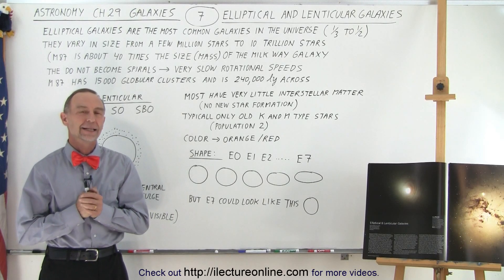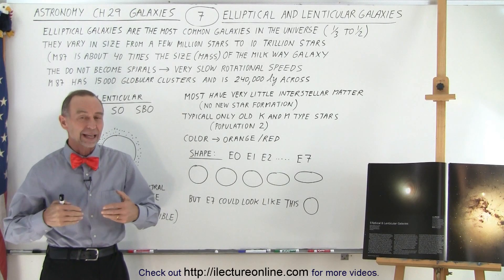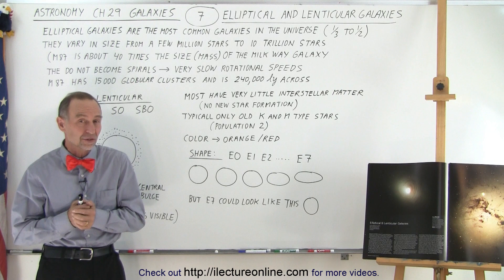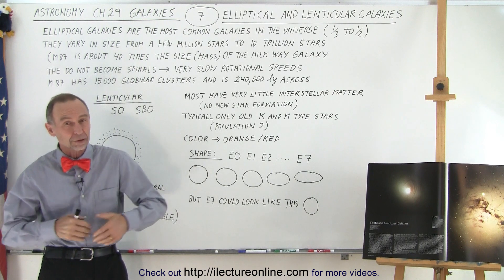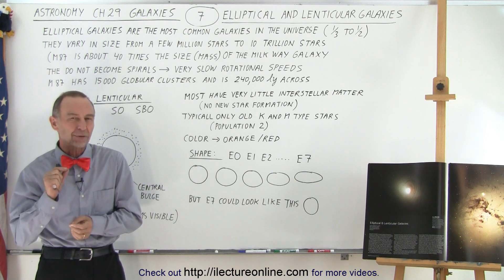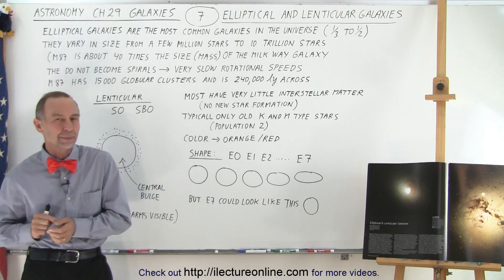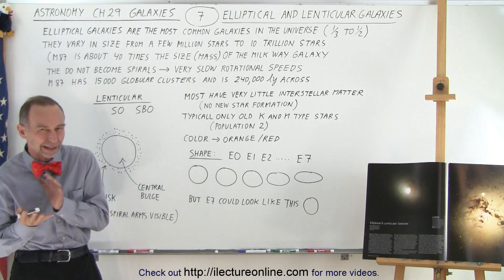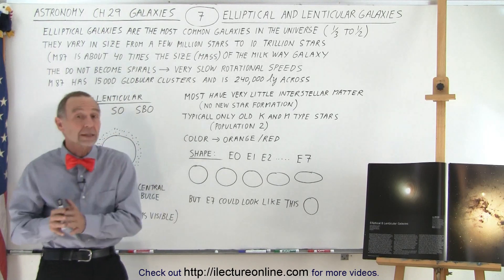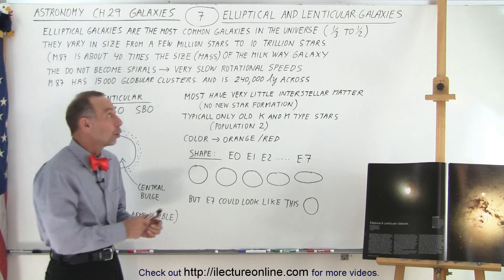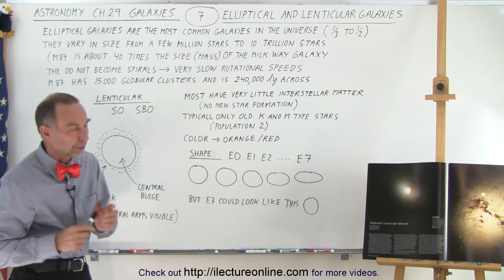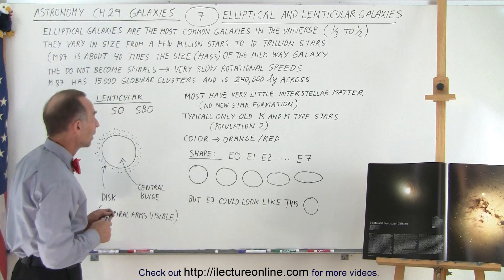Welcome to Electronline. Next, let's take a look at elliptical galaxies, and also among the elliptical galaxies we have a special type that's kind of a cross between elliptical and spiral galaxies. They're called lenticular galaxies, so we'll touch upon that as well.